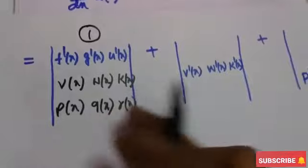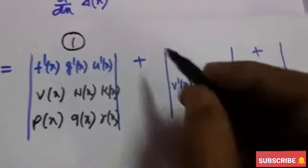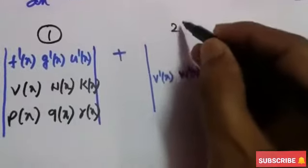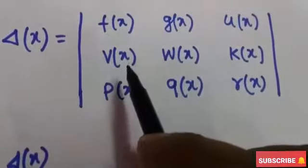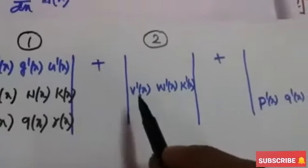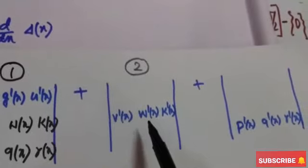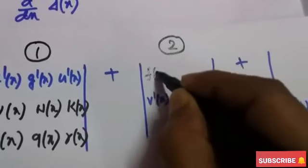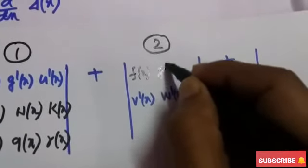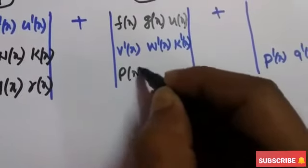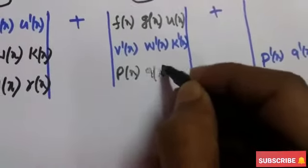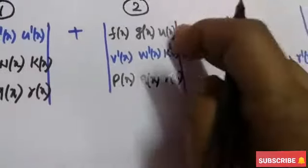For the second determinant, the second row is differentiated individually. The second row is v(x), w(x), and k(x), so it becomes v'(x), w'(x), k'(x). The elements of the first row — f(x), g(x), u(x) — and the elements of the third row — p(x), q(x), r(x) — will remain unchanged.